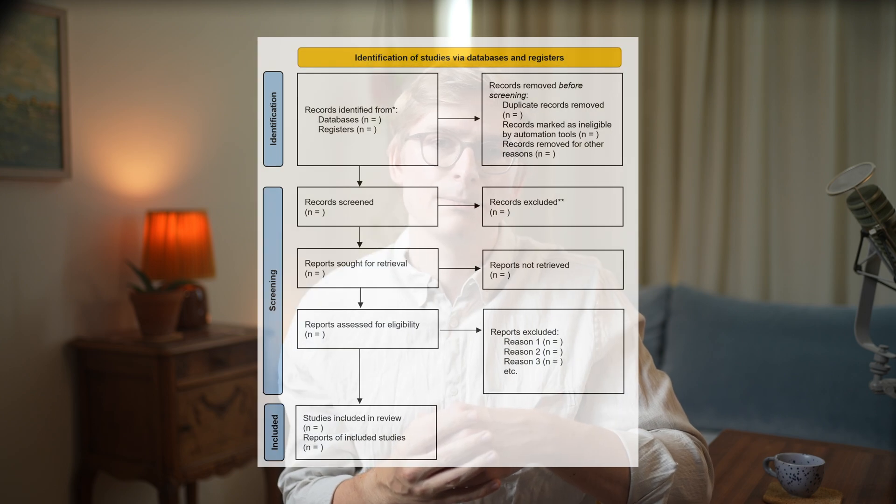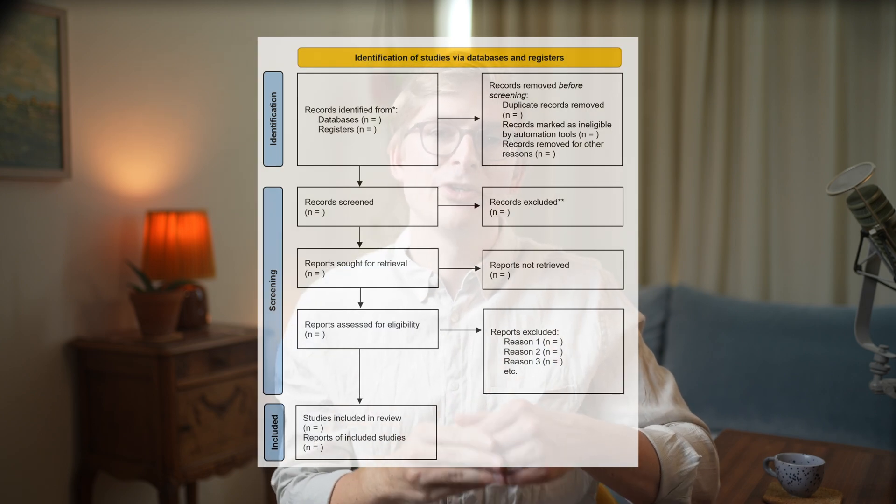Ideally, you want two independent reviewers screening all records individually, which allows you to measure inter-rater agreeability through measures like kappa statistics. Additionally, tracking inclusion and exclusion reasons for each record will help you visualize your screening process using a PRISMA flowchart. I'll leave a link to the full PRISMA statement in the video description, as it is considered best practice to follow such guidelines when developing a medical SLR.